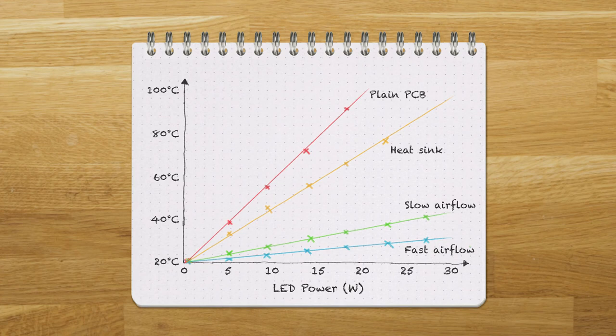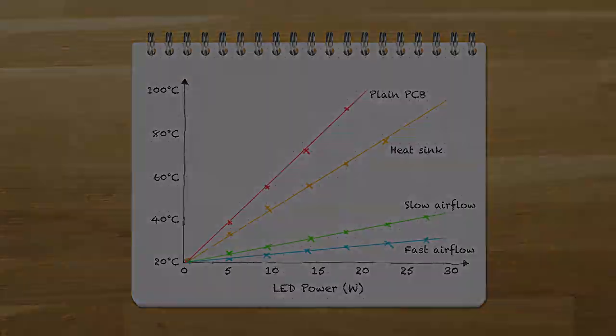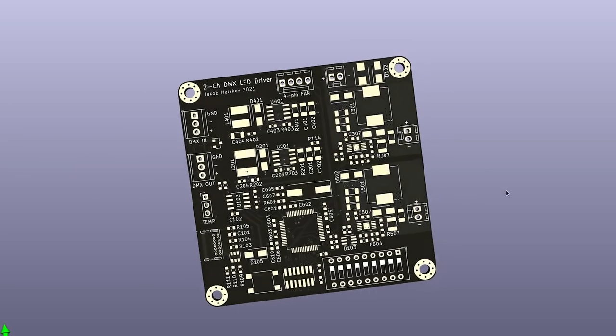Alternatively a larger heatsink can be applied which will have a larger surface area and create more natural convection carrying even more heat away. This is it for part 1 and in the next part we will be creating the LED driver PCB making it possible to control the light output via DMX.